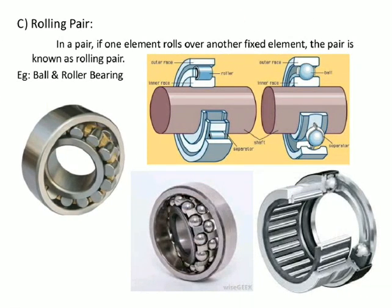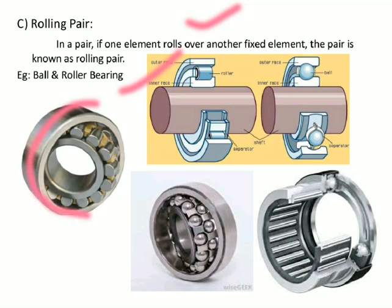A rolling pair is one in which one element rolls over another fixed element. Examples include ball and roller bearings, where the ball or roller rolls over the inner or outer race. This type of pair is called a rolling pair.